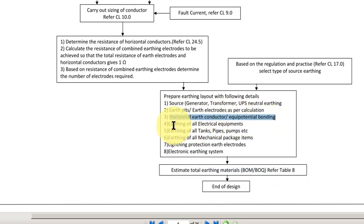And you have to show the earthing of all equipment - electrical equipment. You have to show earthing of all non-electrical equipment like tanks, pipes, pumps, etc. All mechanical package items like compressor skid, cranes - you have to show the earthing. And lightning protection system for buildings or pump house also has to be shown. The electronic earthing system for control room also has to be shown. That is about the layout.